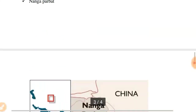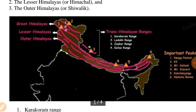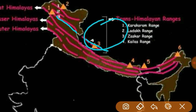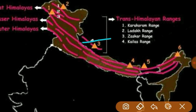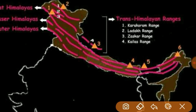The last range of Trans-Himalayas is the Kailas range. It is the extension part of the Zaskar range and lies in the Tibet region of China. We can find Mount Kailas here, and also Lake Manasarovar. This is the place where River Indus and River Brahmaputra originate.